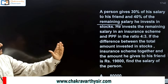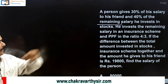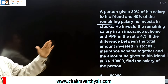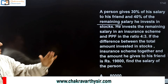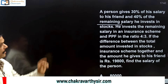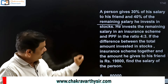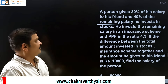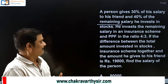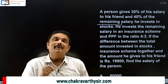He invests the remaining salary in insurance schemes and PPF in the ratio of 4 is to 3. Then if the difference between the total amount invested in stocks and insurance schemes together and the amount given to his friend is 19,800, find the salary of the person.